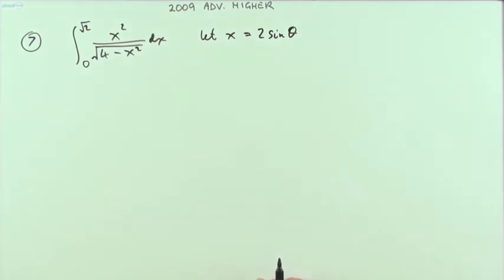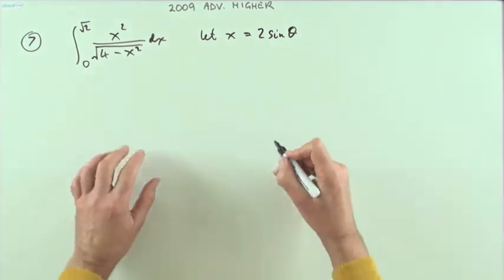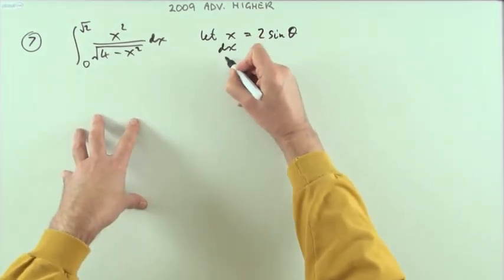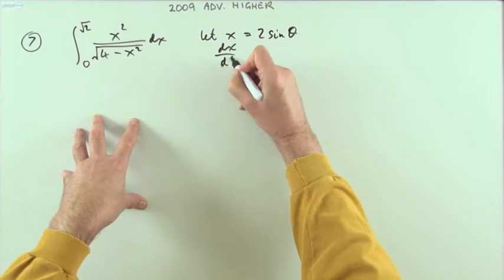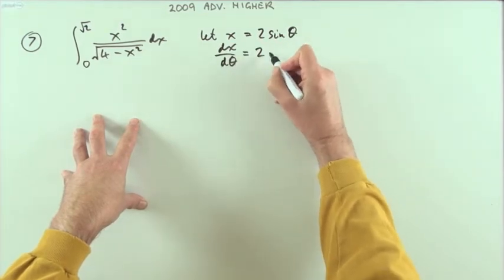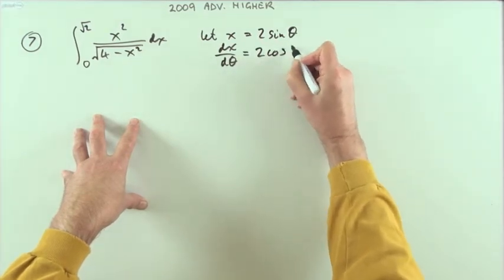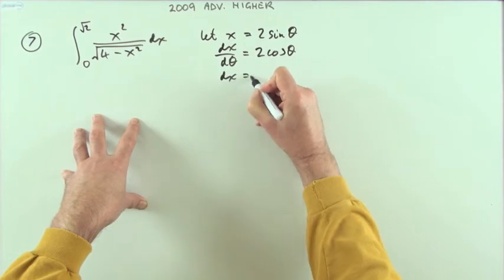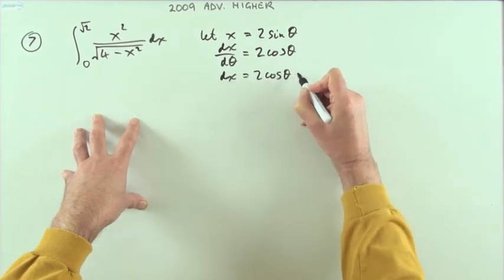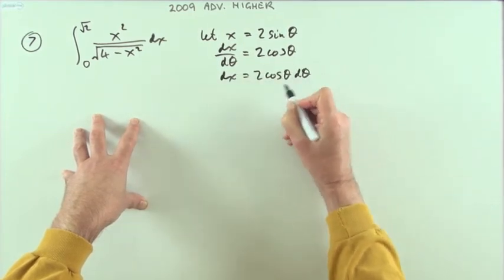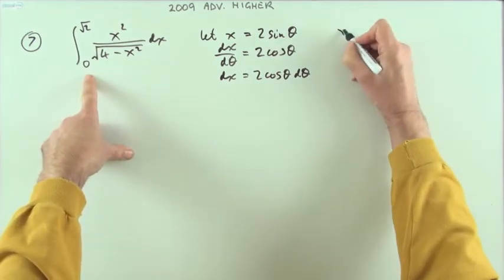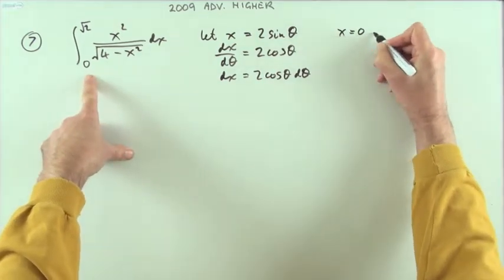Right, so you just start integrating and differentiating. dx/dθ is going to be two cos θ, so dx can be replaced by two cos θ dθ. There, the differentials are taken care of.